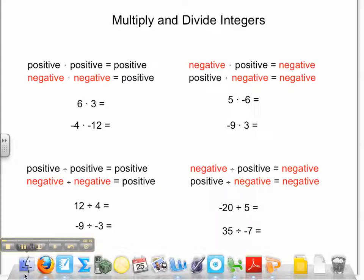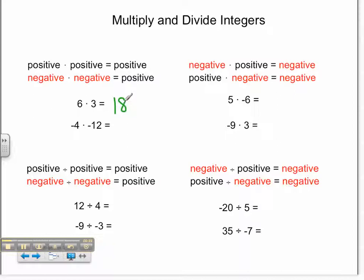So let's take a look. Here we have 6 times 3 and negative 4 times negative 12. In both cases the signs are the same — positive 6 and positive 3, and negative 4 and negative 12. When both signs are the same, the answer is going to be positive. So 6 times 3 is 18. Negative 4 times negative 12 is positive 48.